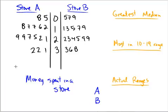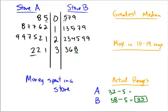To find the ranges of these stores, we look at maximum minus minimum. For store B, the highest value is 38, and the lowest value has a stem of 0 with a leaf of 5, so that's just 5, giving a range of 33. For store A, the highest value is 32, and the lowest value is also 5, so the range for store A is 27.